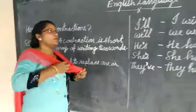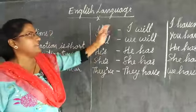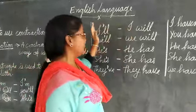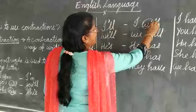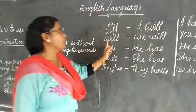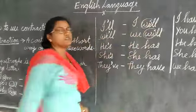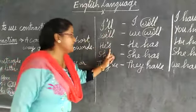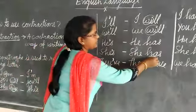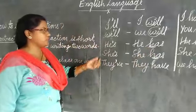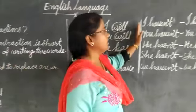Now let us see some more contraction forms. Here on the left is the contraction form, and on the right are the two words from which it is made. 'I'll' comes from 'I will' — W and I are removed and apostrophe is put. 'We'll' comes from 'we will' — same rule. 'He's' comes from 'he has,' and 'she's' from 'she has' — H and A are removed. 'They've' comes from 'they have.'